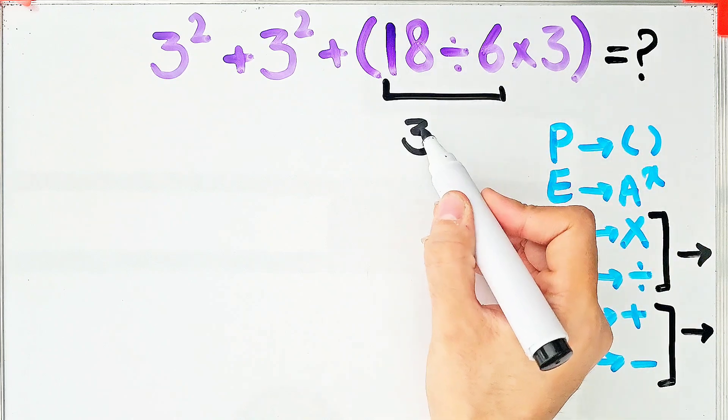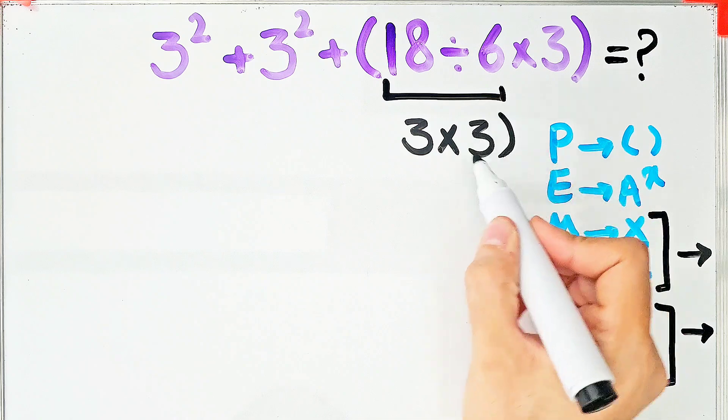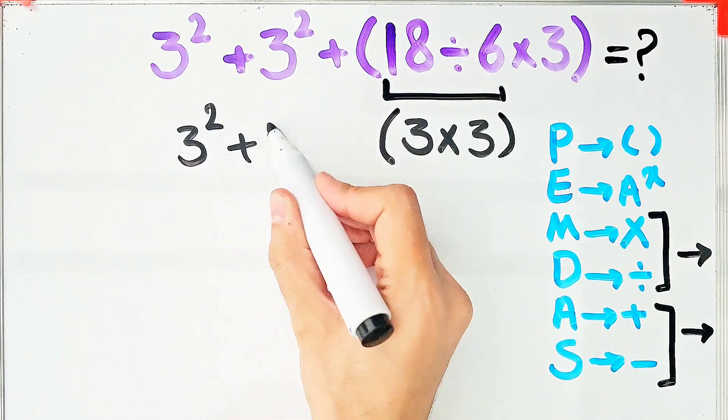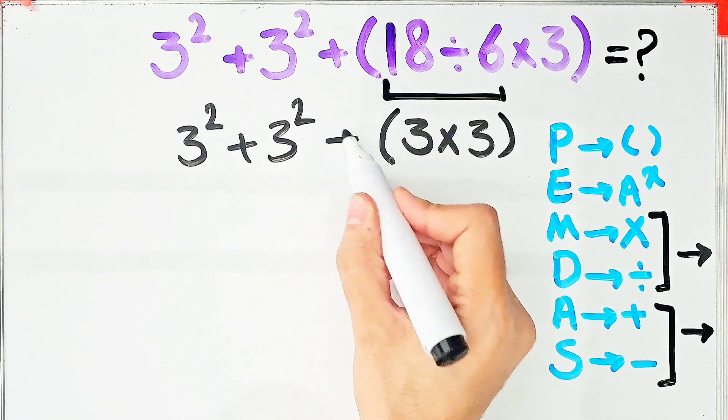18 divided by 6 equals 3 and 3 times 3. Inside the parentheses, the question becomes 3 to the power of 2 plus 3 to the power of 2 then plus 3 times 3.